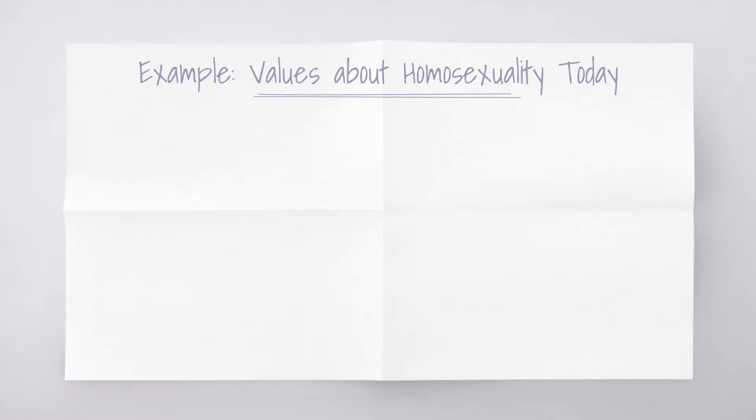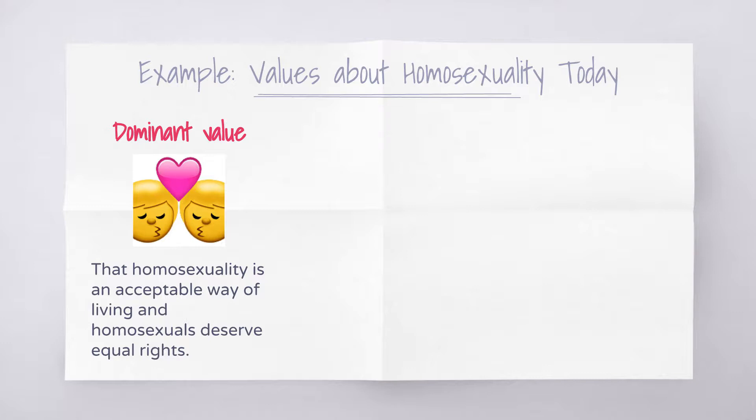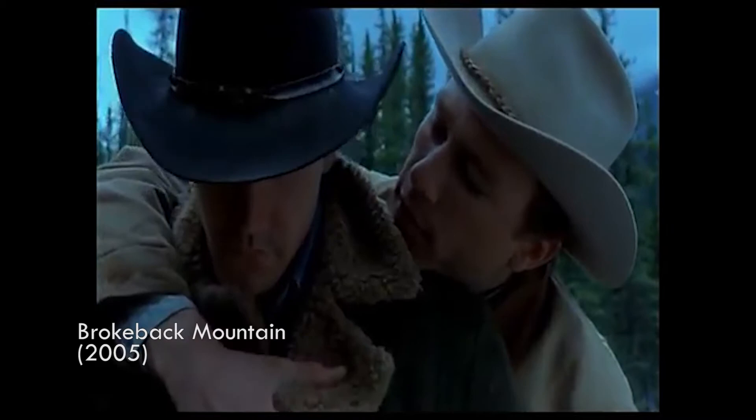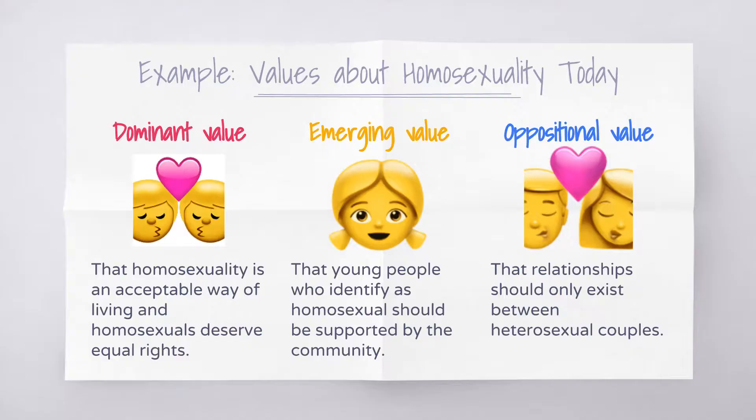As we know, social values change over time. So if we look at homosexuality in the context of America today, the dominant value is that homosexuality is okay and certainly accepted, whereas the oppositional value would be that homosexuality is a sin. We have now changed those dominant and oppositional values from the 1950s to today. And an emerging value might be that homosexuality is not just accepted in adults, but it's something that we see young people go through and that they should be supported as well.